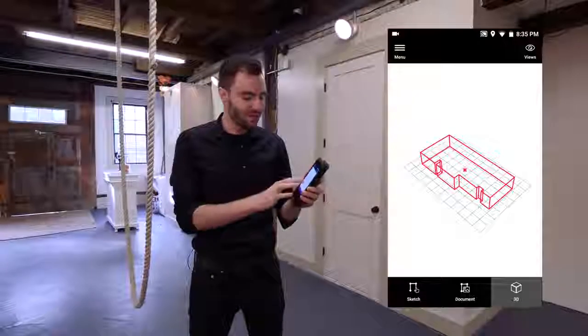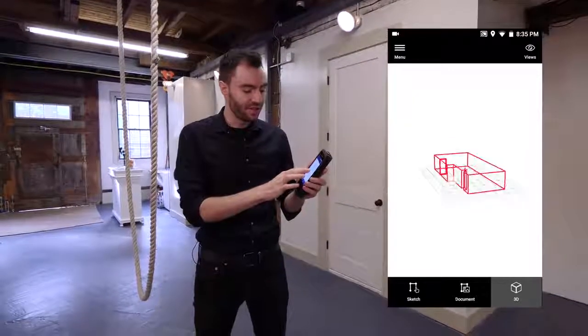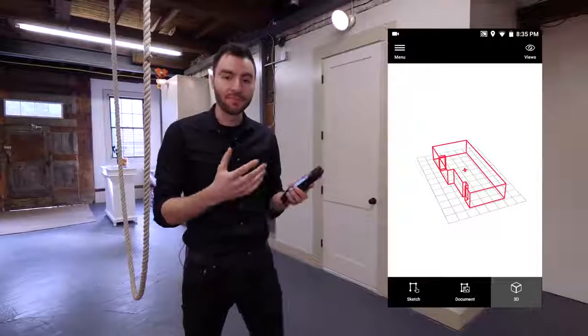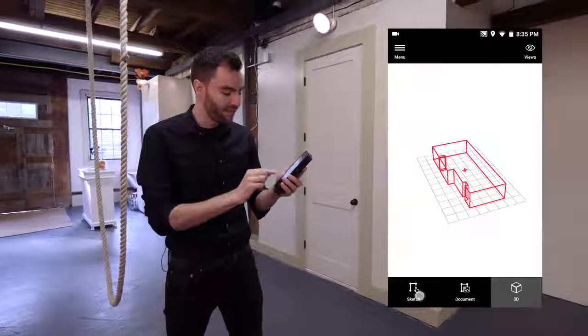So my model looks pretty good. But you can see I don't have any doors or windows. But I can add them really easily in the sketch tab.